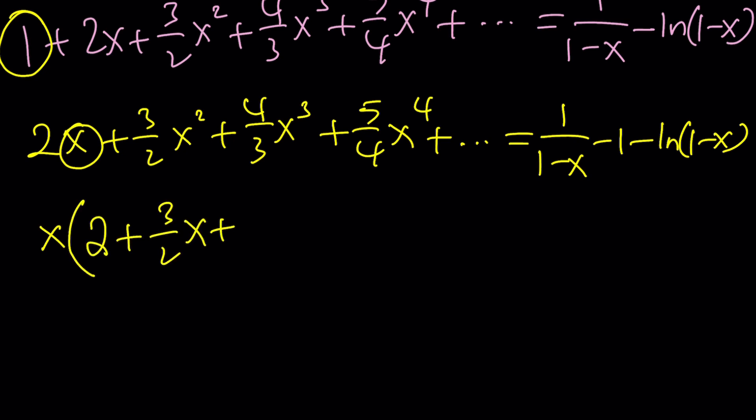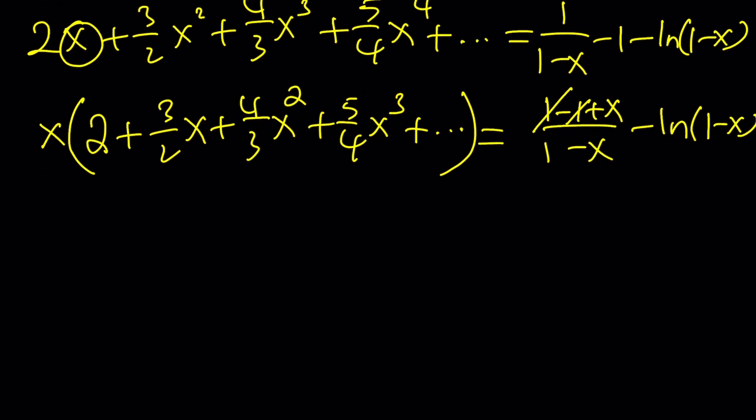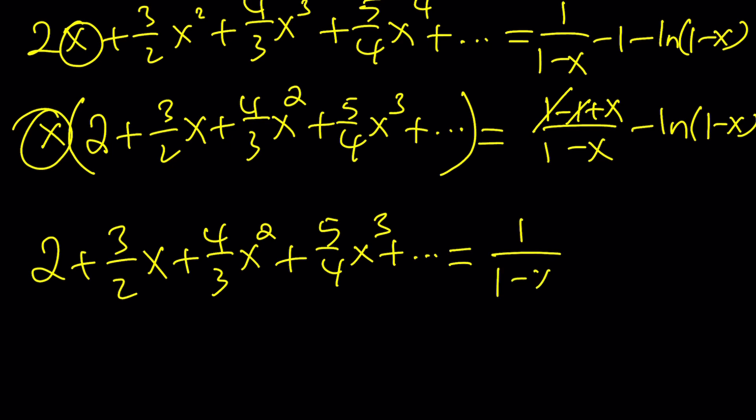Isn't that beautiful? By manipulating the sum using calculus, algebra, factoring and so on, we're able to get what we want. Everything will be divided by x. This simplifies to: 1s cancel out and I get x/(1-x), then we divide everything by x, and that's the sum we're looking for. So this sum is equal to 1/(1-x) - ln(1-x)/x.